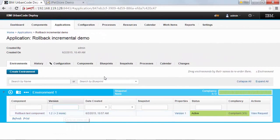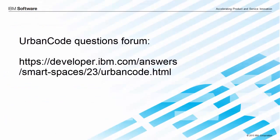So those are the two main scenarios you can use rollback for in IBM Urban Code Deploy. If you've got questions, look us up on the forum and we'll try to help. Thanks for listening.